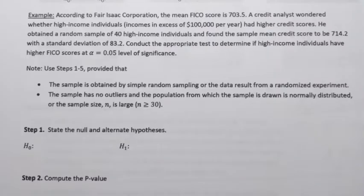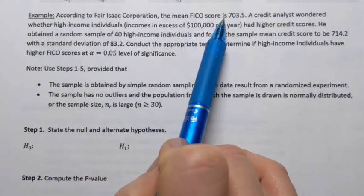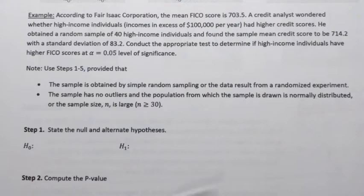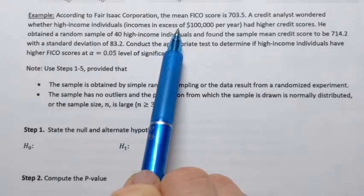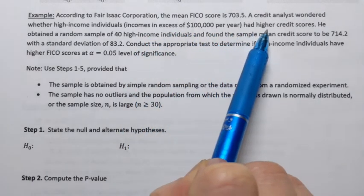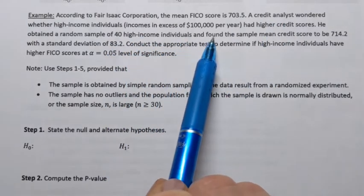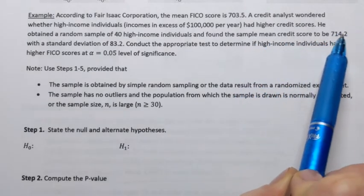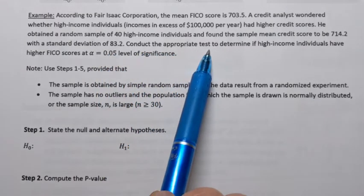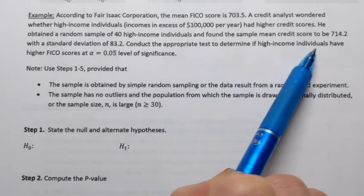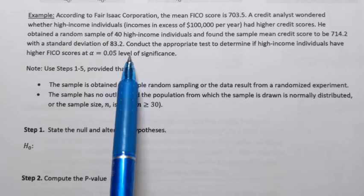So let's look at an example. According to Fair Isaac Corporation, the mean FICO score is 703.5. A credit analyst wondered whether the high-income individuals, incomes in excess of $100,000 per year, had higher credit scores. He obtained a random sample of 40 high-income individuals and found the sample mean credit score to be 714.2, with a standard deviation of 83.2. Conduct the appropriate test to determine if high-income individuals have higher FICO score at alpha equals 0.05 level of significance.